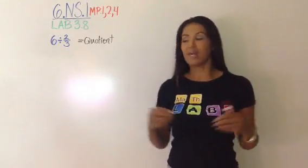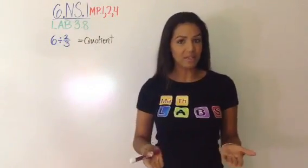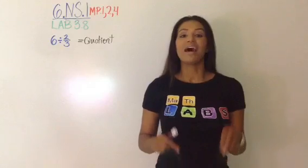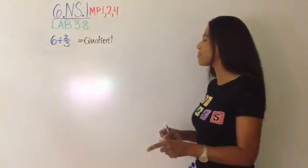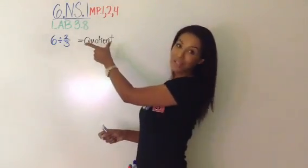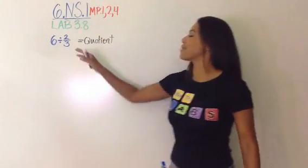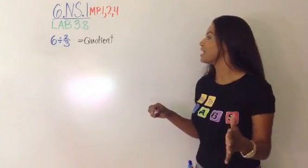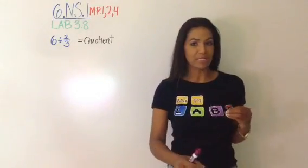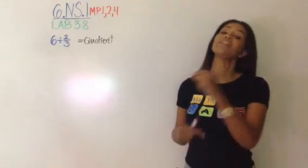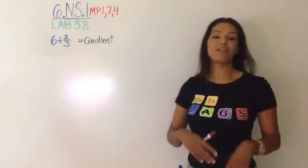Let's look at lab 3.8. Read the objective with me: 'I can use a visual model, specifically a number line, to find quotients of fractions.' Remember, quotient is the answer when you divide. Product is multiply; sum and difference are adding and subtracting respectively. We're going to look at an example with whole numbers on a number line first, then solve a problem like 6 divided by 2/3 and a fraction divided by a fraction using a number line.